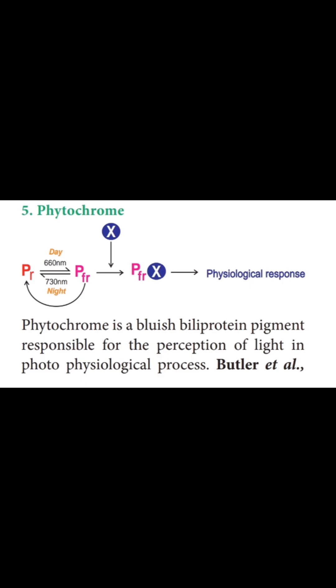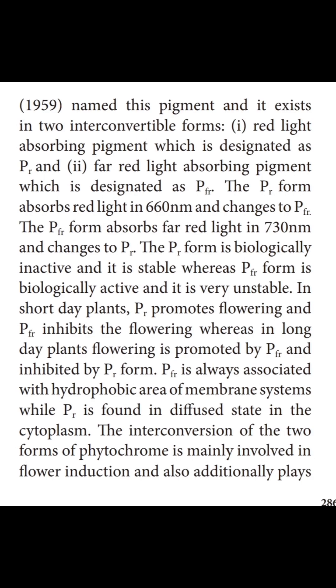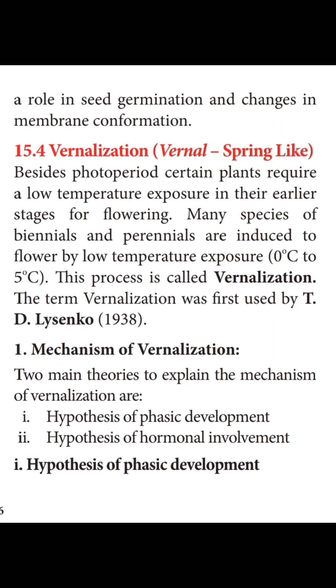The interconversion of these two forms of phytochrome — PR and PFR — is mainly involved in flower induction and additionally plays a role in seed germination and changes in membrane permeability.